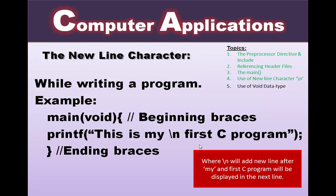The newline character — the backslash n adds a new line. For example, in the program void main, with printf 'this is my \n first C program', the text 'this is my' will be printed on line one, and the backslash n will terminate that line so 'first C program' appears on the next line. The \n breaks the output into two lines.